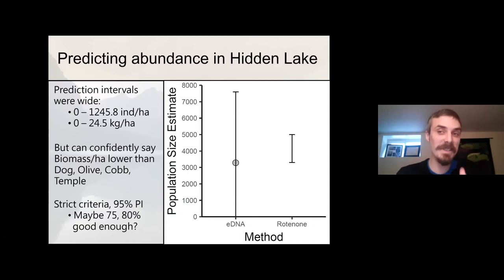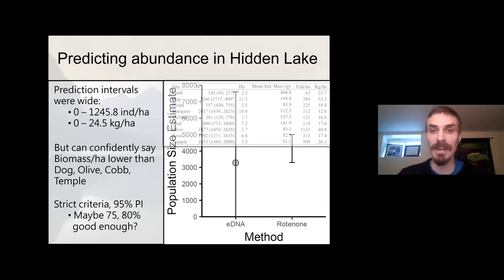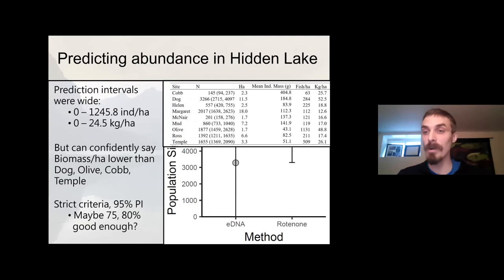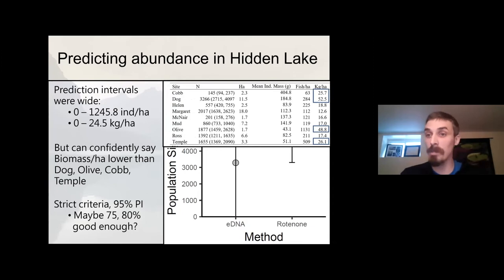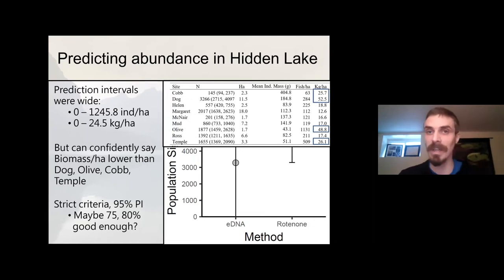Very interestingly, this still actually allowed us to do some quantitative comparisons with our original nine study lakes. We can confidently say that Hidden Lake has a lower biomass per hectare than at least four of our nine study lakes, using a pretty strict 95% prediction interval criteria. Maybe something like 75% to 80% might be good enough for most managers if they're interested in just an initial screening pass using something like eDNA.